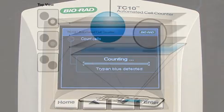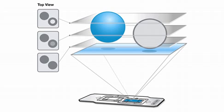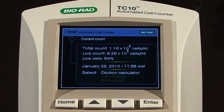If Trypan Blue is detected in the sample, the TC10 cell counter uses a multi-focal plane analysis in which each cell is scored on multiple focal planes to determine if it is live. This prevents undercounting of live cells that can happen if only a single focal plane is used for analysis.